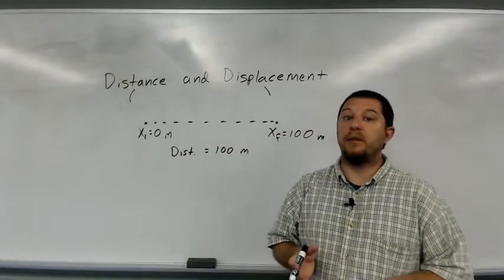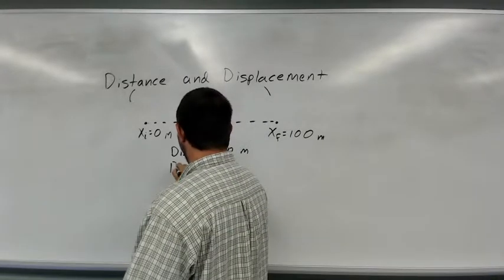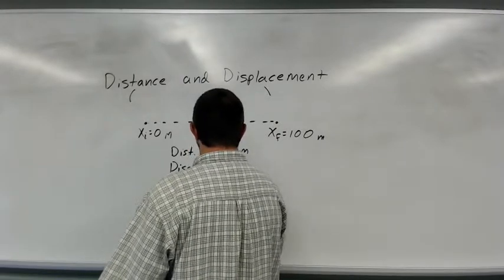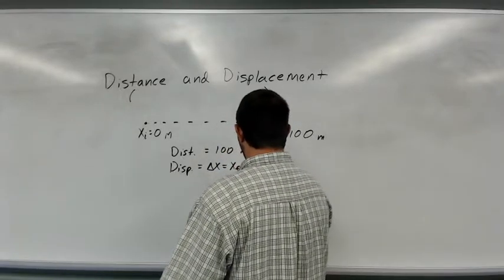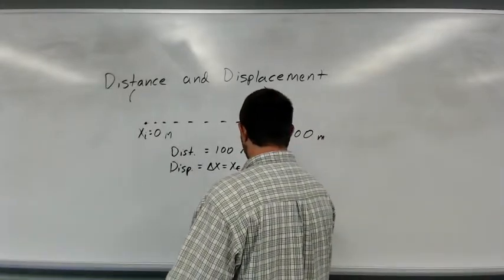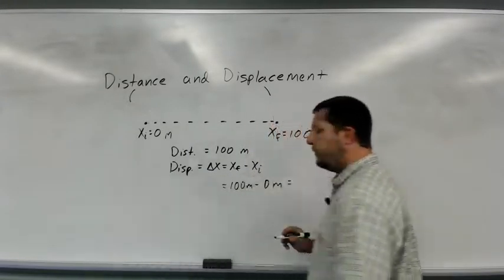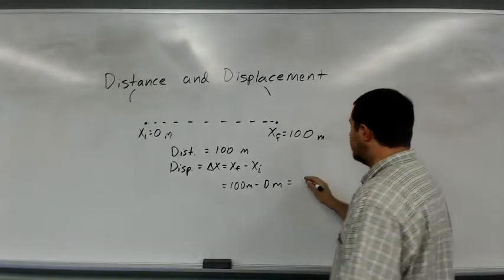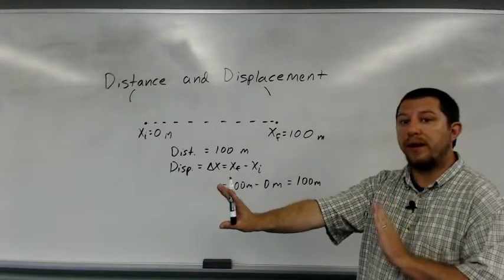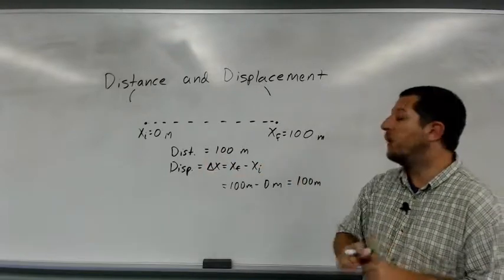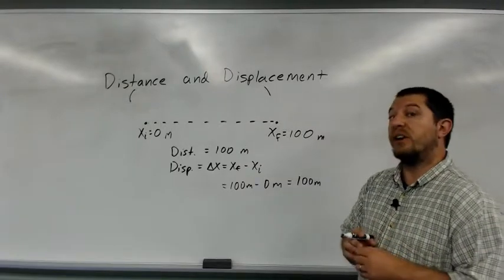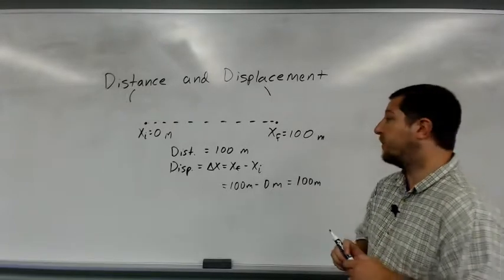What about the displacement? Delta-x equals x-f minus x-i. x-f is 100 meters minus x-i of zero meters, giving a displacement of 100 meters. So in a straight line moving in one direction, distance and displacement are equal. But as we will see shortly, that will not always be the case, and that has some pretty profound implications.